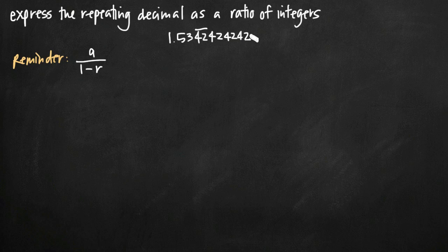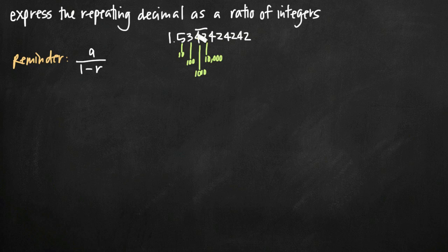In order to first express this as a geometric series, we need to figure out the decimal place of the repeating portion of our decimal. The 5 is in the tenths place, the 3 is in the hundredths place, the 4 is in the thousandths place, and the 2 is in the ten-thousandths place. With these kinds of problems, you always want to look at the rightmost or last decimal place of the repeated part — not where the repetition starts, but where it ends. So we're interested in the ten-thousandths decimal place.